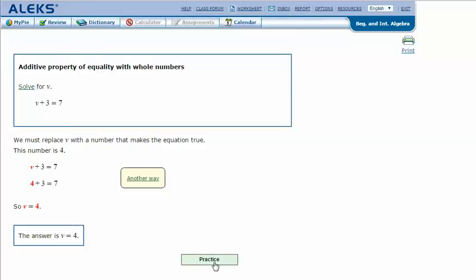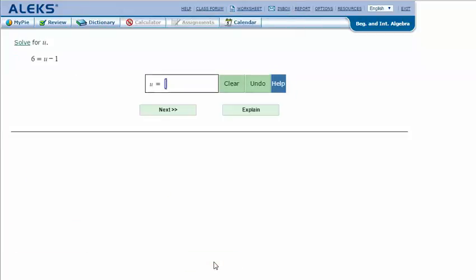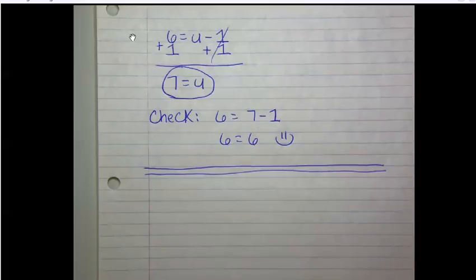Let's try another one. Solve for U: 6 equals U minus 1. Here are my notes. 6 equals U minus 1. And so you can either ask yourself, what minus 1 equals 6 and come up with 7, or if you're not sure, you can go through the process here. And so since this is subtracting 1, the opposite of subtracting 1 is adding 1 to get rid of these so that we get U by itself on one side and an answer on the other side.